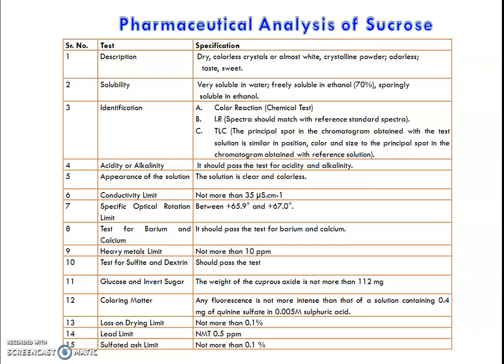As well as the glucose and invert sugar test — the weight of cuprous oxide obtained in the test should not be more than 1112 mg. It should pass as per the specification. For coloring matter, any fluorescence should not be more intense than that of a solution containing 0.4 ng of quinine sulfate in 0.05 molar sulfuric acid. The loss on drying limit should be not more than 0.1%. The lead limit should not be more than 0.5 ppm. The sulphated ash limit should not exceed 0.1%. These are the pharmaceutical analysis aspects for the quality control of sucrose.